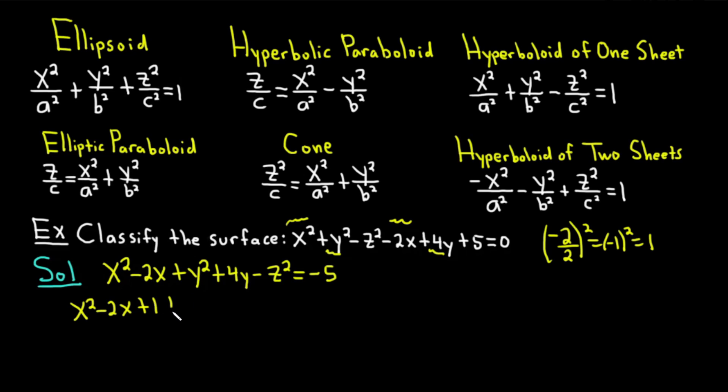So then we have plus y squared plus 4y. And again, completing the square. So you get 4 over 2 and you square it. Take the coefficient of y, which is 4, divide it by 2 and square it. So 2 squared is equal to 4. So we just add the 4.